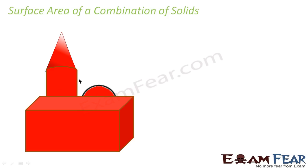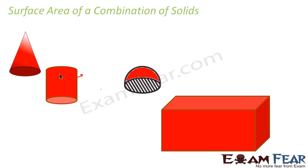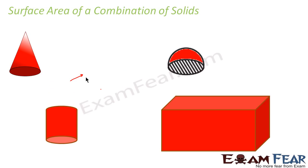Another example: a house-shaped figure with a cone on top, a cylinder below, a sphere, and a cuboid. If you separate these pieces, you get individual basic shapes. To find the surface area of the whole figure, you find the area of the cone, cylinder, hemisphere, and cuboid and add them. Similarly, for volume, you find the volume of each part and add.